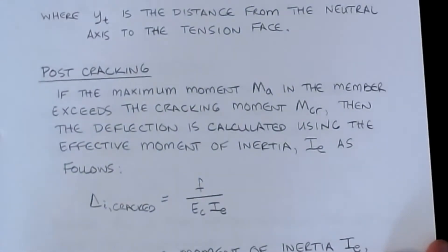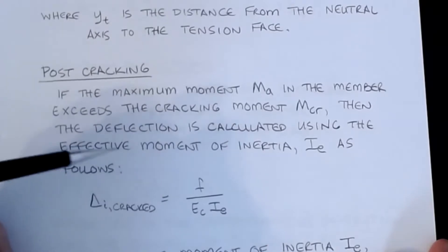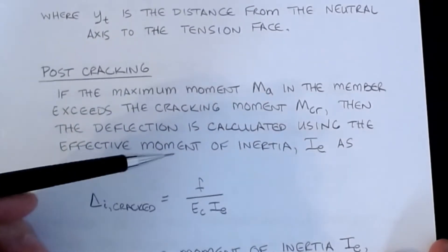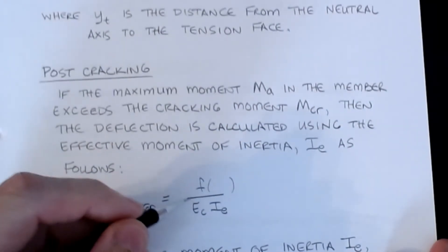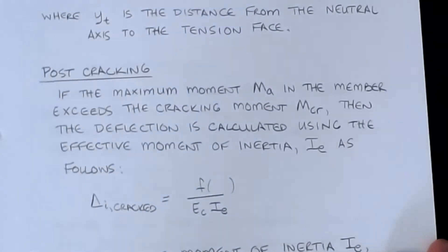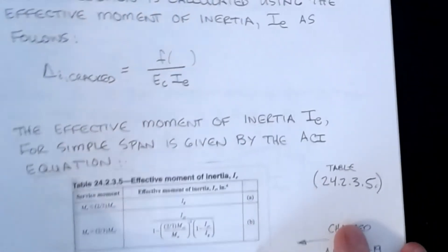And so after post cracking, if the maximum moment, what we call is M sub A and the members exceeds that cracking moment, MCR, then the deflection is calculated using the effective moment of area, effective moment of inertia I sub E as follows. That our deflection is that functional form F over E sub C over I sub E. Now, one of the problems with I sub E is that it changes with the load. As the beam first cracks, I have a certain behavior. And then as I increase the load, it cracks a little bit more and your I changes, your I effective changes. And then as I keep increasing the load, the I continues to change as the load continues to change. And so what you'll see is that the ACI provisions have you calculate an effective moment of inertia that is kind of a ratio of your applied moment to that cracking moment value to be able to calculate those particular values.